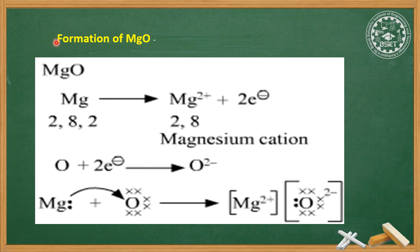Now we will discuss the formation of magnesium oxide. In the magnesium oxide molecule, there are two atoms: one is magnesium and the other is oxygen.